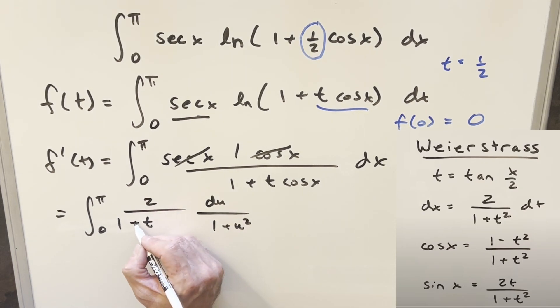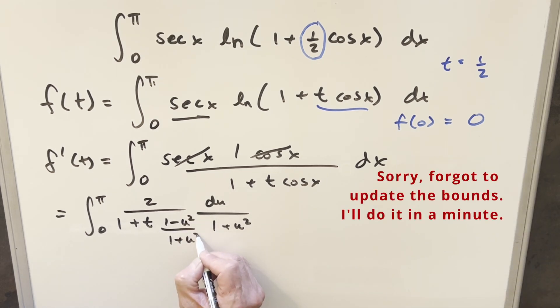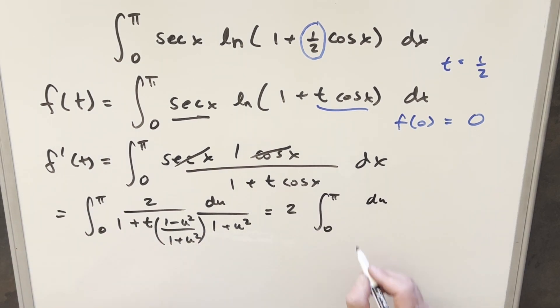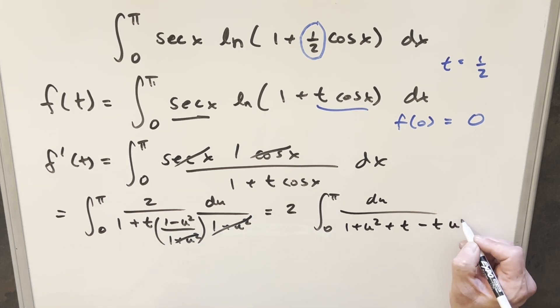Then we have one plus t. Our value for cosine is going to be one minus u squared over one plus u squared. Then we need to clean all this up. I'll bring the two up front here. Then we distribute in the one plus u squared to the one. So we're going to have one plus u squared plus, then this is going to cancel with this, distribute in the t. We're going to have t minus t u squared.